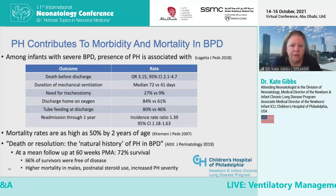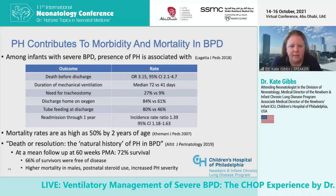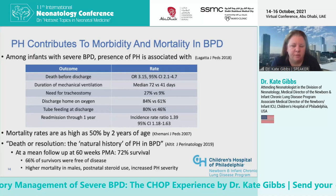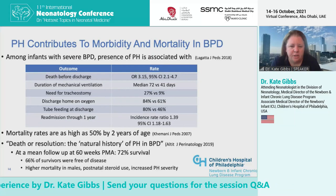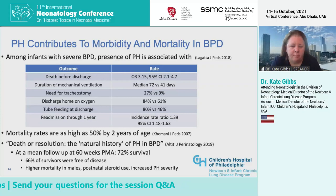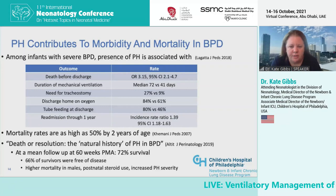Pulmonary hypertension contributes to morbidity and mortality in BPD. Data from the Children's Hospital Neonatal Consortium show that BPD-PH patients had higher rates of death before discharge, longer duration of mechanical ventilation, need for tracheostomy, discharge home on oxygen, and readmissions. Mortality rates are as high as 50% by two years of age. However, with good nutrition, growth, time, and support, there is ongoing alveolarization and lung growth, and many of these infants will be free of disease at approximately 60 weeks postmenstrual age.